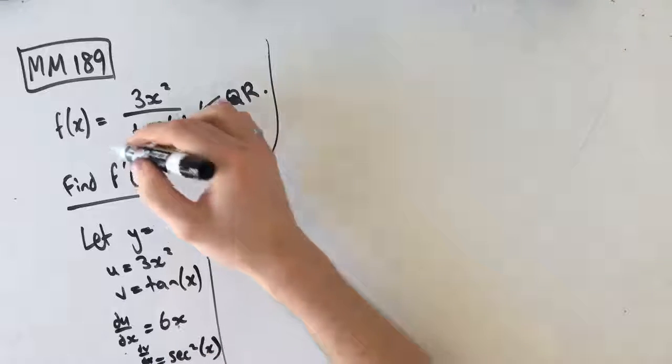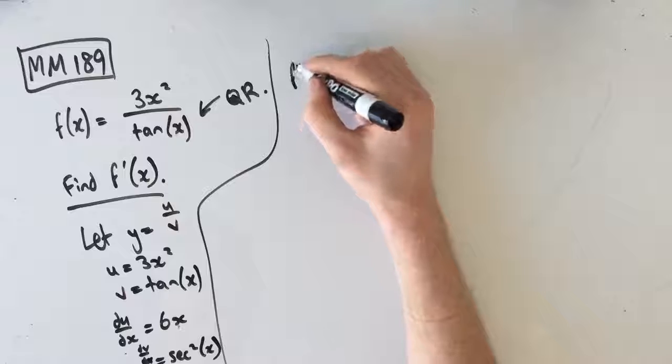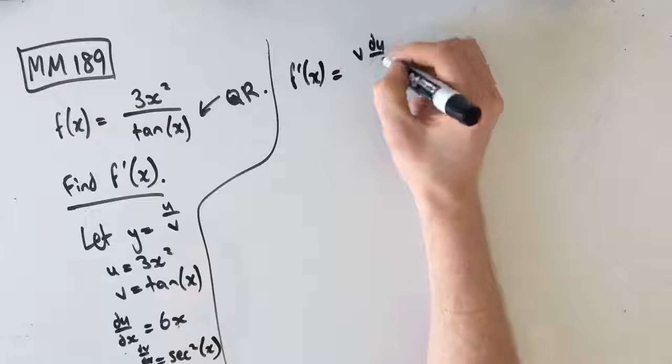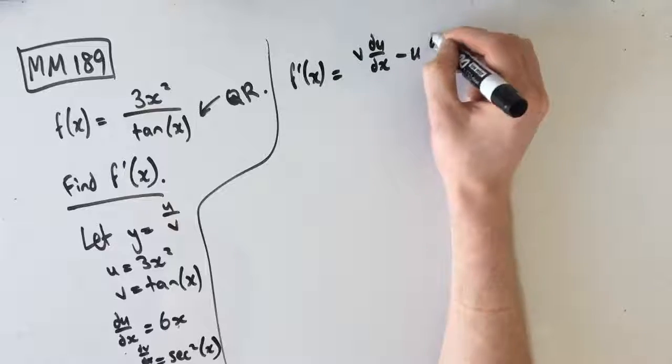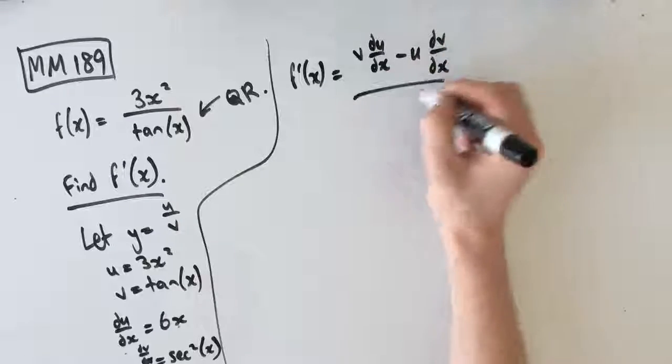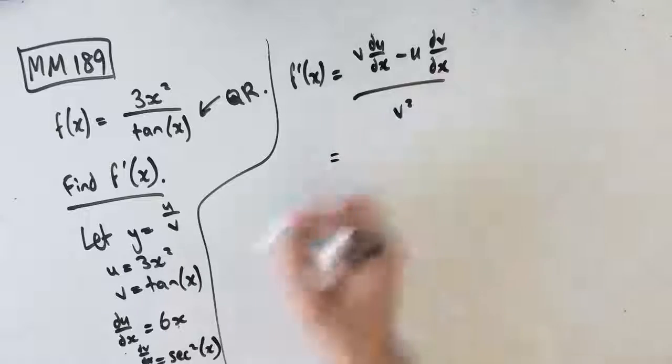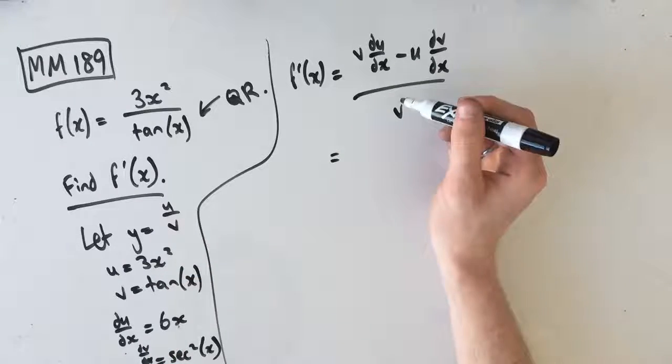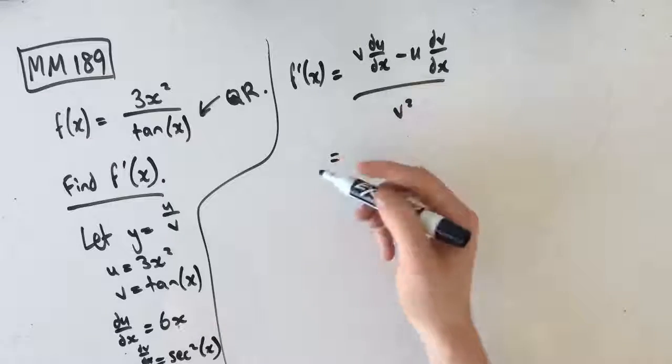So from here, we know that the derivative of f of x, so f dash of x equals the quotient rule, which is v times du dx minus u dv dx over v squared. Fantastic. And now we can simply sub in our values without having to work anything out as we're going.